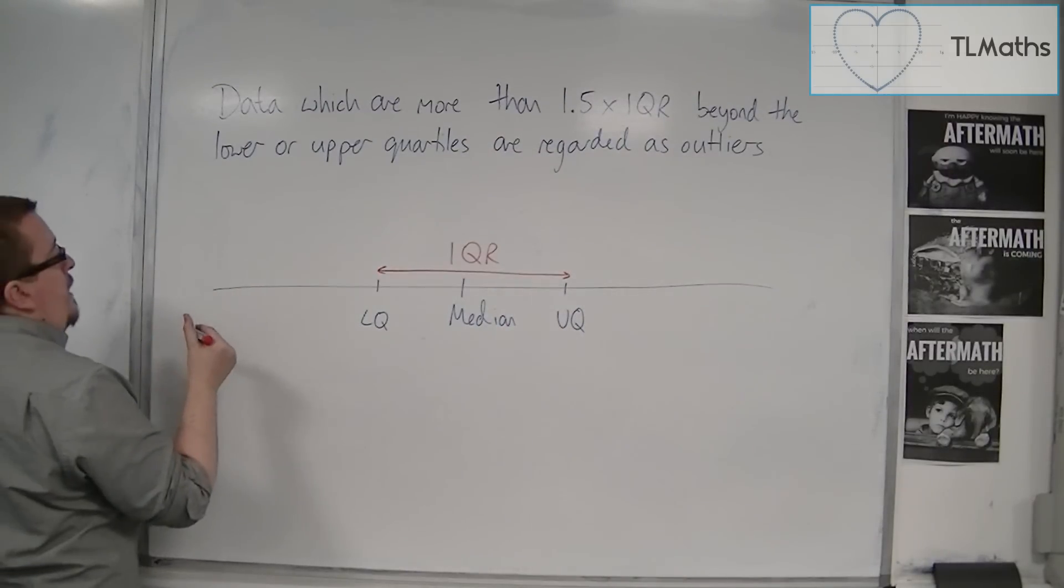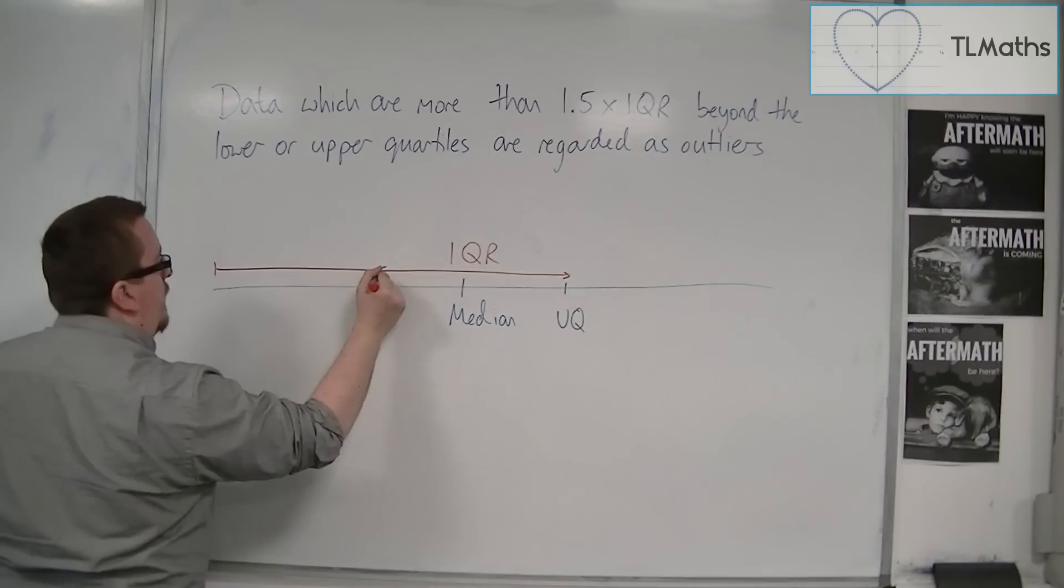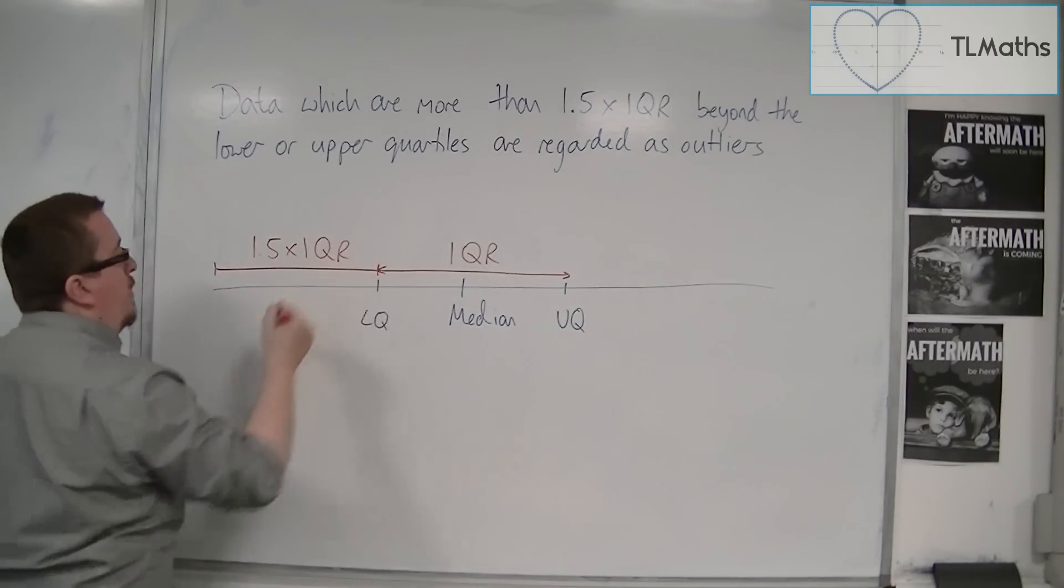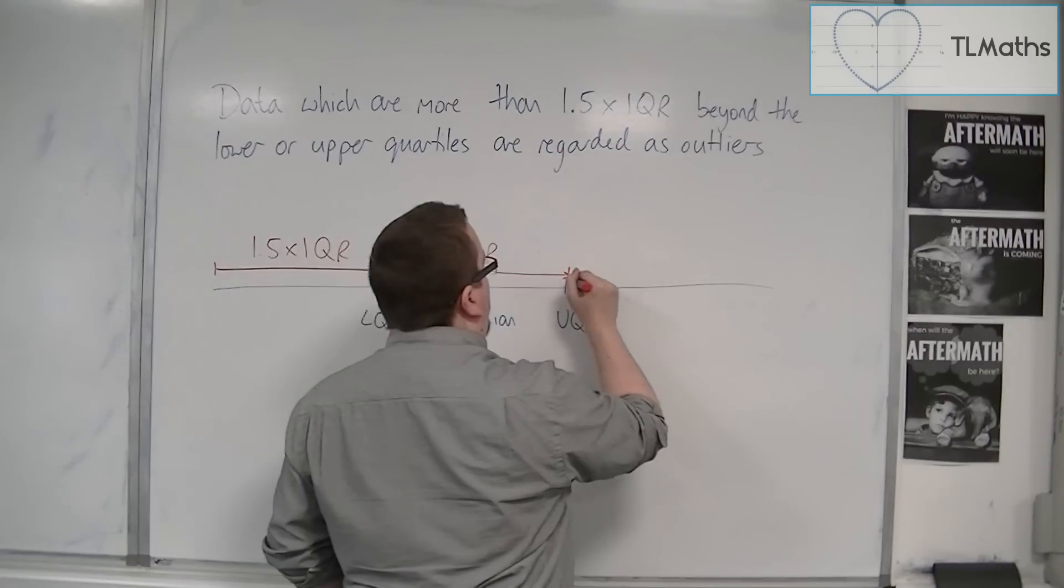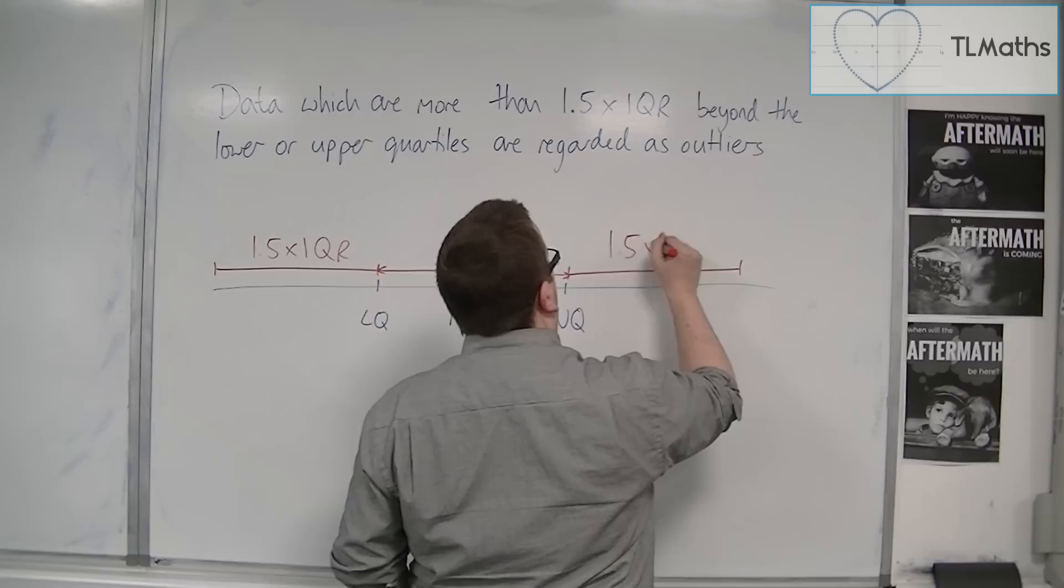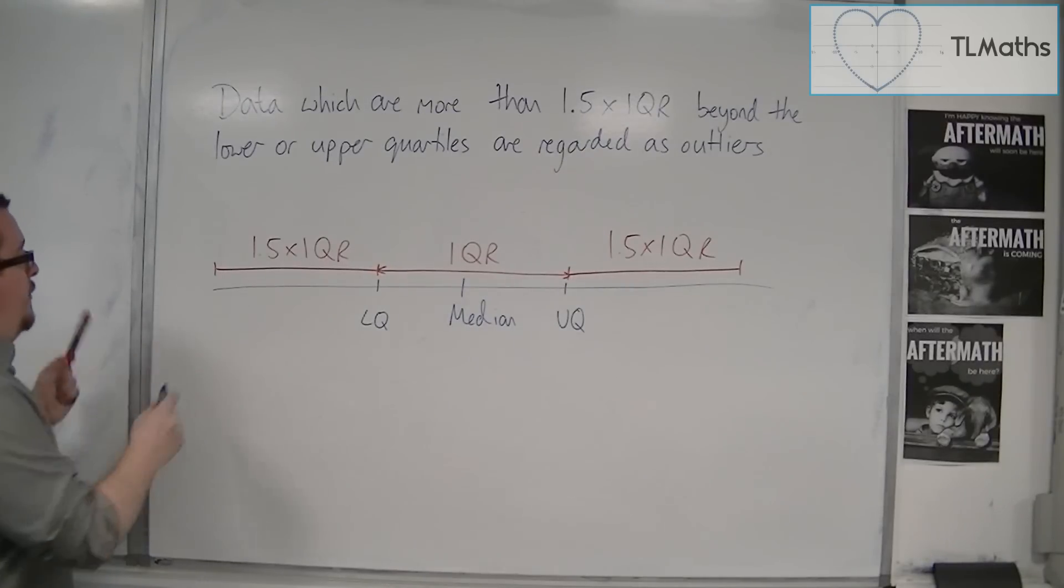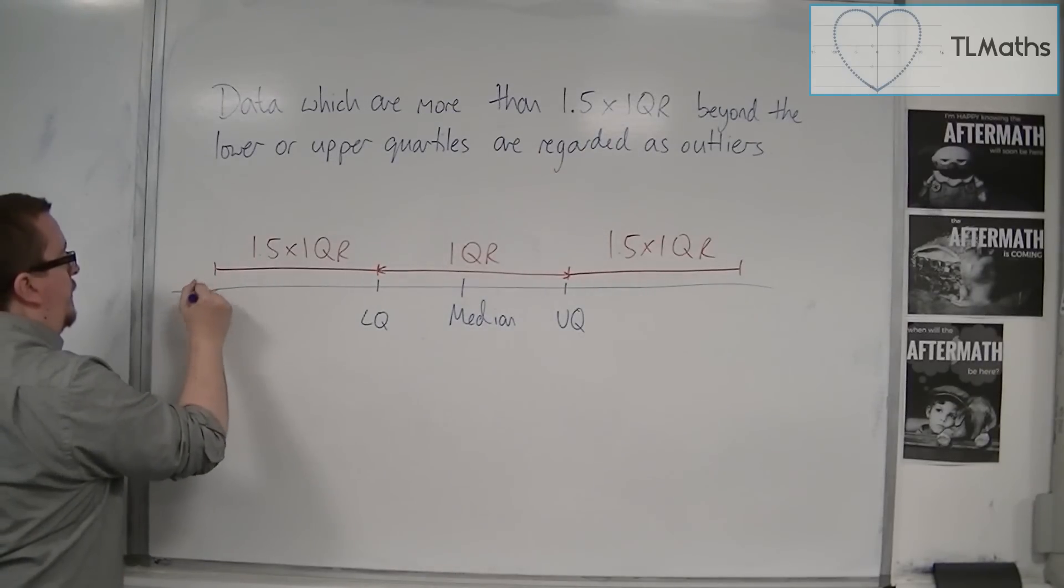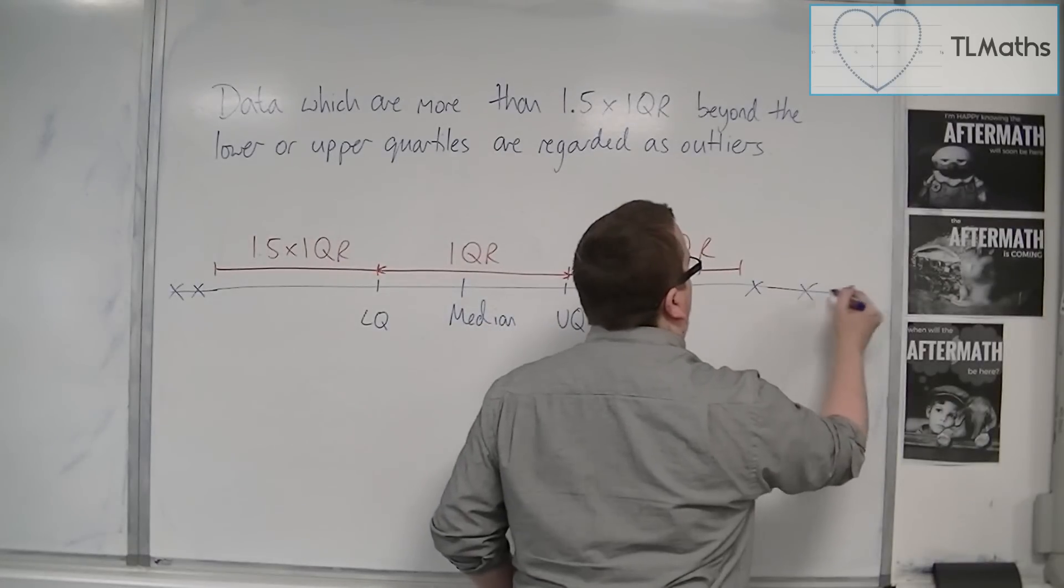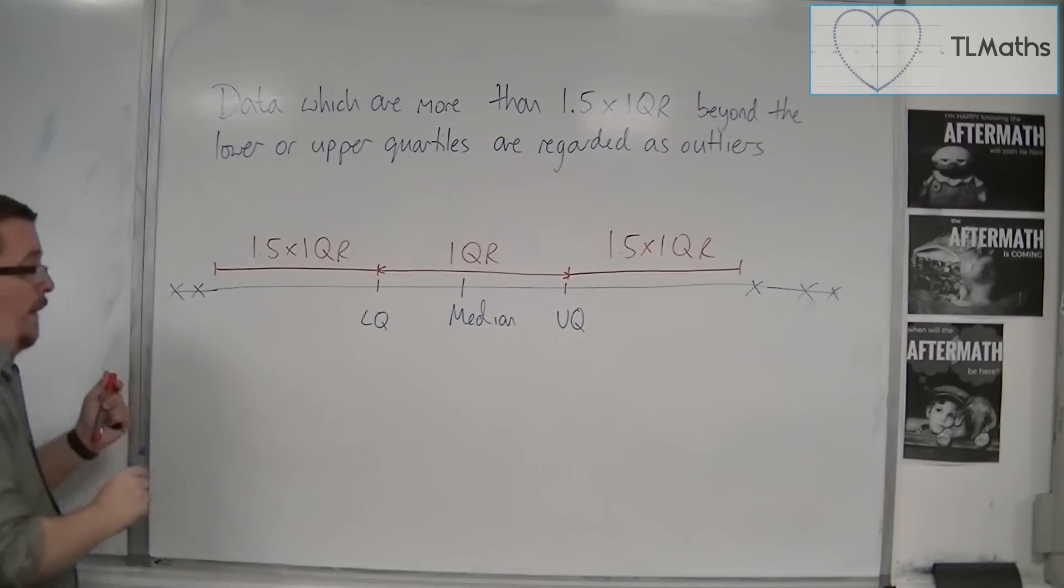If there are data points that are 1.5 times the interquartile range on either side of the lower quartile or upper quartile, if there are any data points outside of this range, then they are outliers.